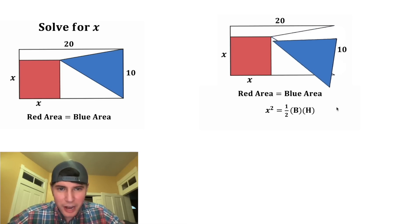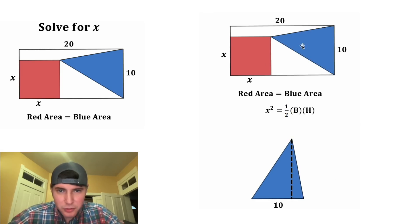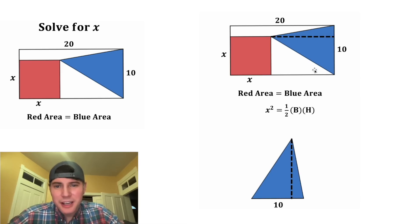Let's see if we can pull out this blue triangle. So the base of this triangle is 10, but we still gotta find the height. And this height would correspond to right here. I see how we can get the height. The whole base of this rectangle is equal to 20. This piece is x, so this piece would be 20 minus x. And that's gonna be the same thing as this height right here.